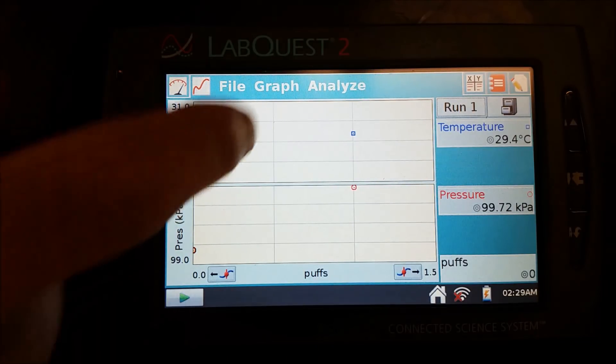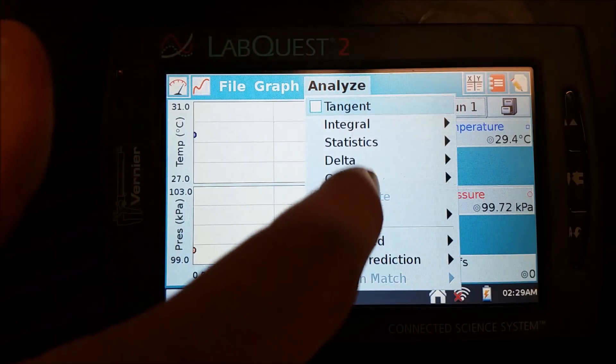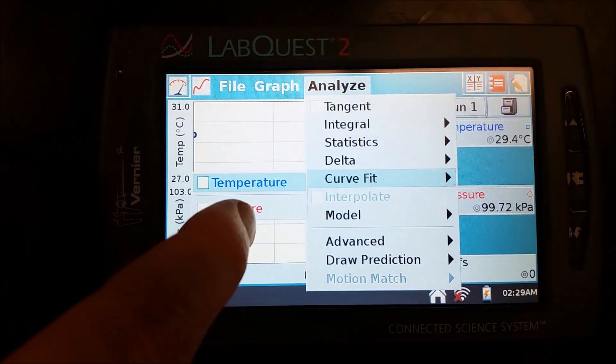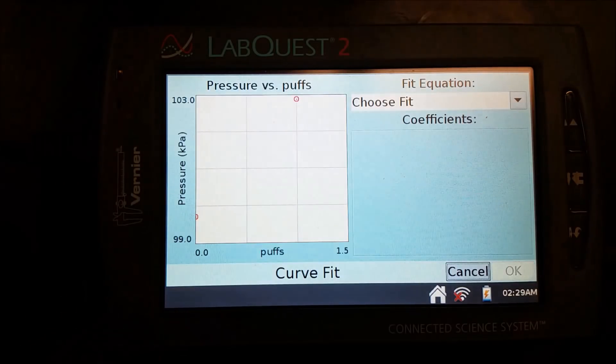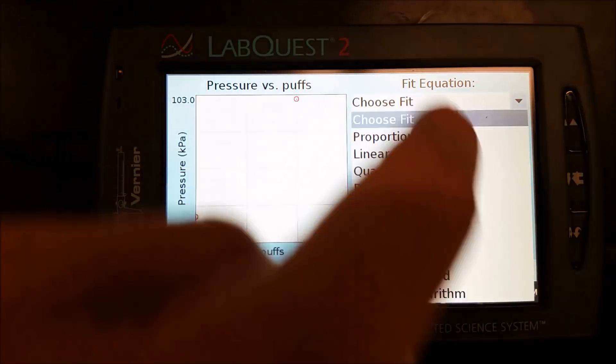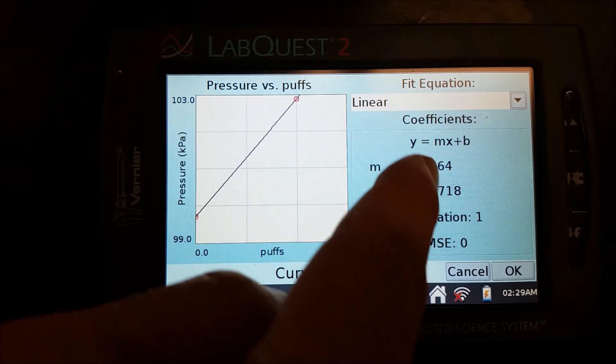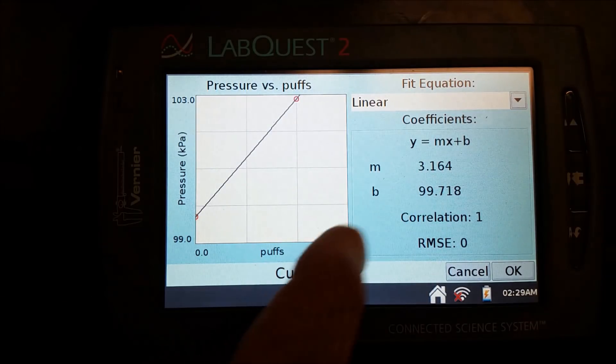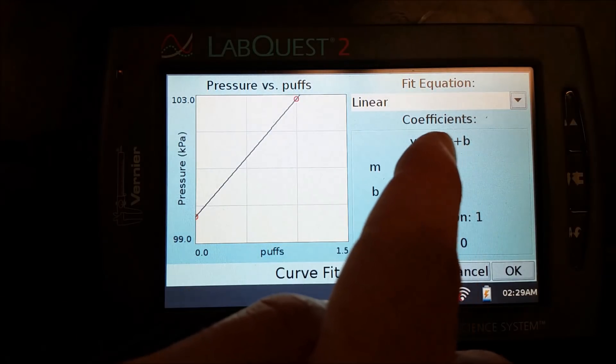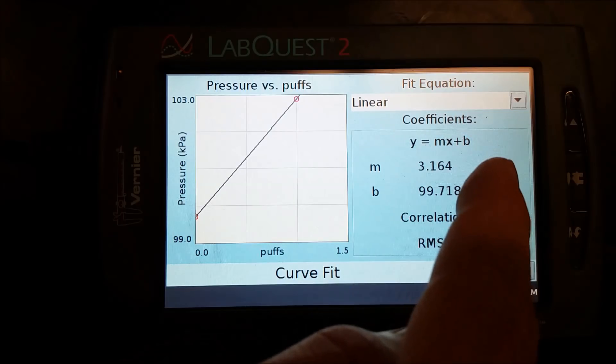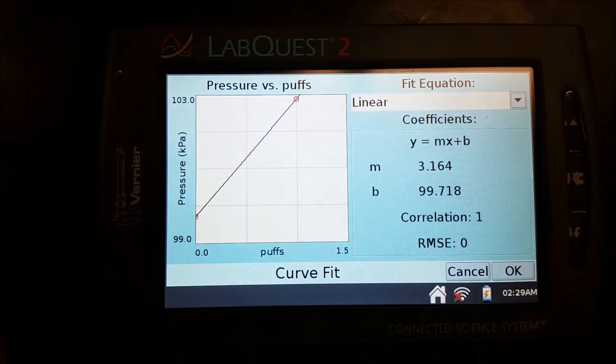So what we're going to do is we're going to hit stop. We're going to go to analyze. And we're looking at the pressure versus puffs, and we'll get a graph like this. And we'll go ahead and plug in the linear, and we get our y-intercept. We get our slope. So we get pressure is equal to the slope times the number of puffs plus that.